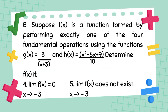For Letter B: suppose f of x is a function formed by performing exactly one of the four fundamental operations using the functions g of x and h of x. Determine f of x if the limit of f of x equals 0 as x approaches negative 3, or if the limit of f of x does not exist as x approaches negative 3.